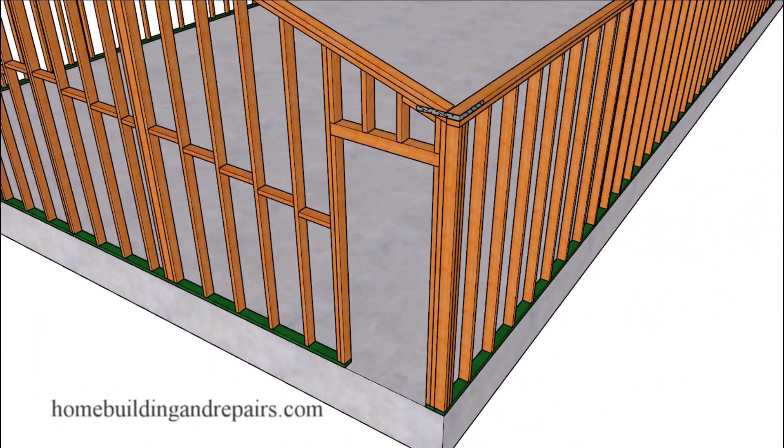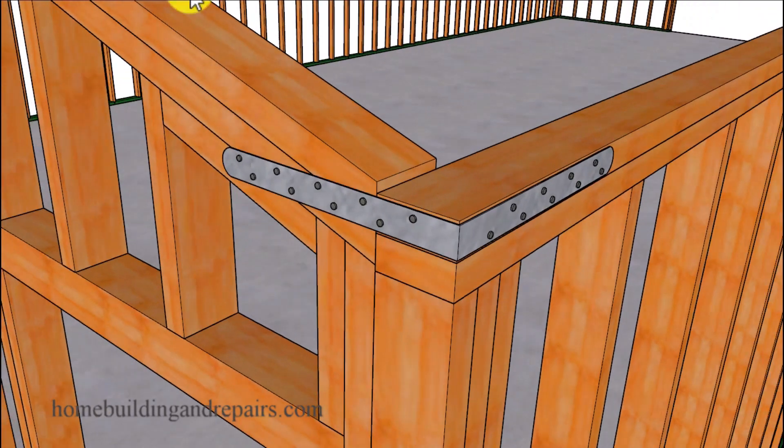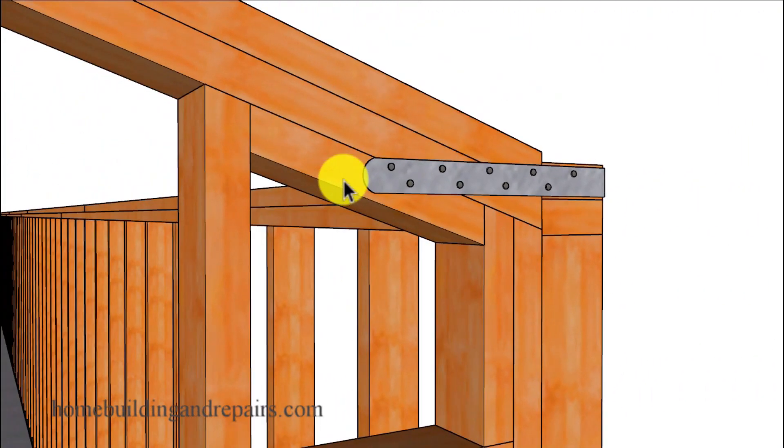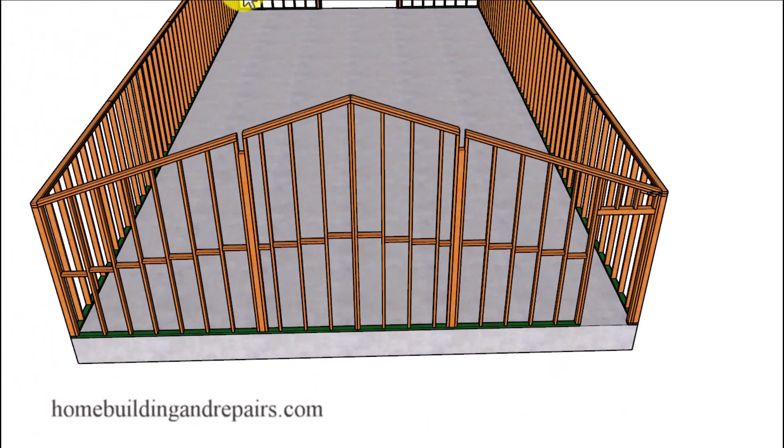A strap that we're using here to connect these two corners together to create a nice structural connection there. In this case here we needed to add an additional block underneath the top plates so that we could get additional nailing for the strap there.